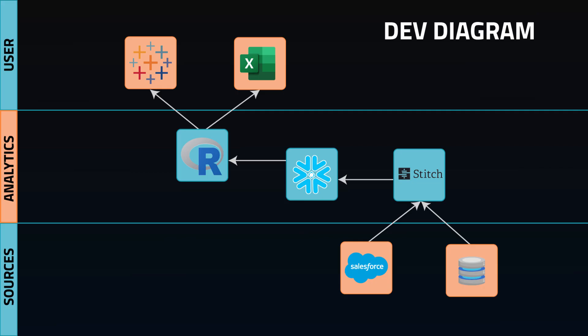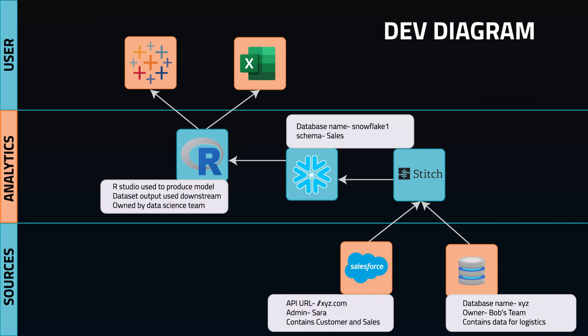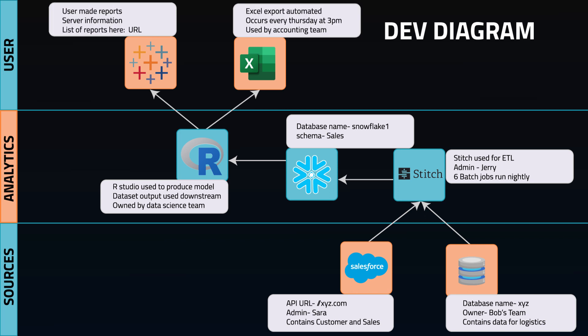Building on that, we have the dev diagram. This time our audience is developers and engineers who will build and maintain the system. The same flow is displayed, but we're going to layer on useful information. We'll highlight things like the name of databases or source applications, who owns or administers each of those systems, a general idea of what data they provide, how frequently ETL occurs, and what team owns each of these products — basically an overview of where to find things and who to contact for more information.